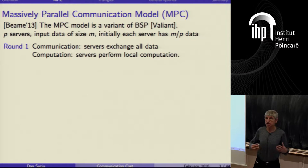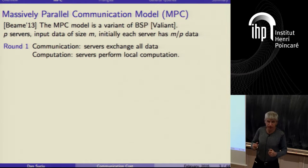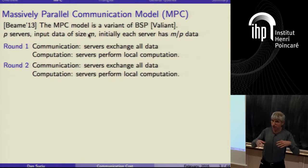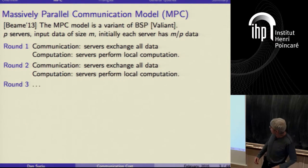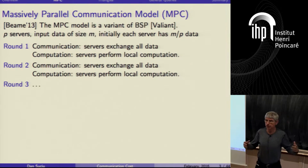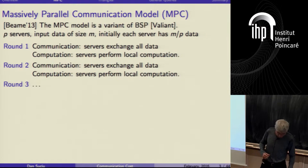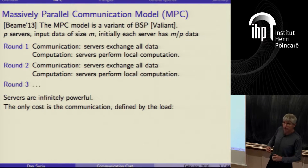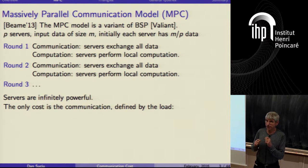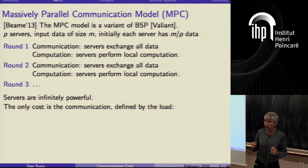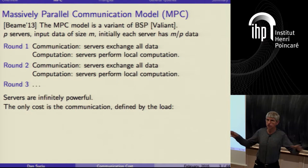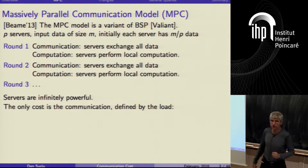In the first round, the servers reshuffle the data — they communicate and reshuffle — and then do some local computation on the data they have. In round two they communicate again, reshuffle, and do more local computation, and so on. At some point they output their results locally. Each server can send data to any other server; during one round there is a complete data reshuffling, where each server sends some data to all the other servers and decides exactly which data to send.